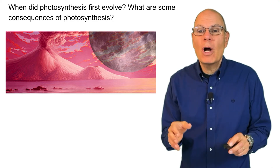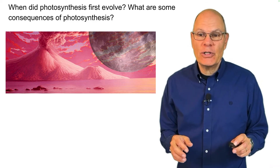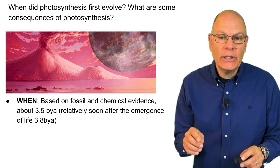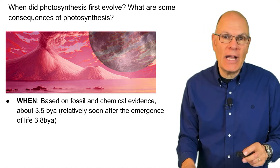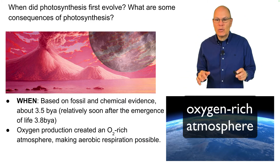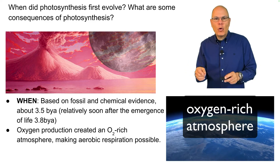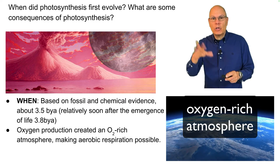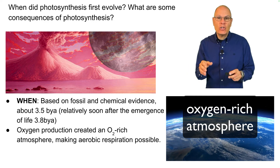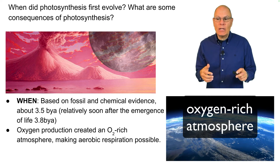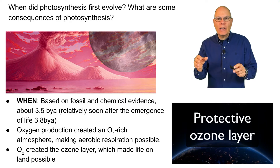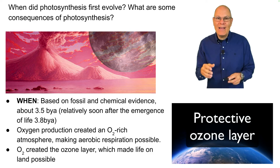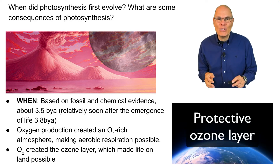When did photosynthesis first evolve, and what were its consequences? Based on fossil and chemical evidence, photosynthesis evolved about 3.5 billion years ago — relatively soon after the emergence of life 3.8 billion years ago. Its consequences were vast. When Earth first formed, there was no oxygen in the atmosphere. Photosynthesis splits apart water to release oxygen, creating the oxygen-rich atmosphere that made aerobic metabolism possible. It also created the ozone layer, shielding life from ultraviolet radiation and making life on land possible.